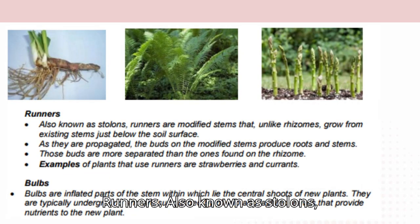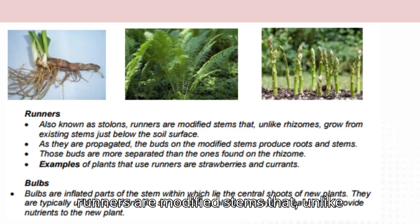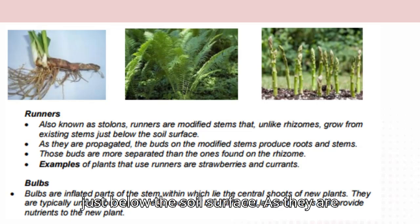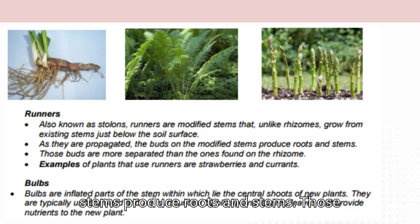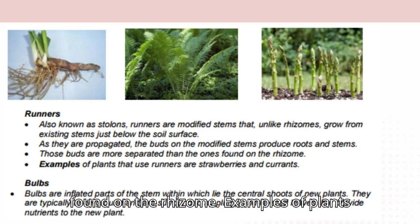Runners, also known as stolons: runners are modified stems that, unlike rhizomes, grow from existing stems just below the soil surface. As they are propagated, the buds on the modified stems produce roots and stems. Those buds are more separated than the ones found on the rhizome. Examples of plants that use runners are strawberries and currants.